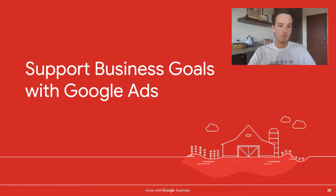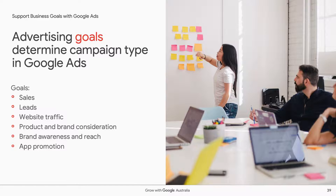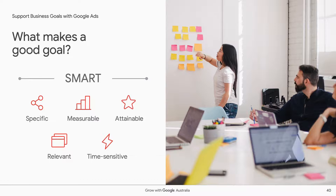To figure out which campaign type is best for your business, we recommend coming up with stringent advertising goals — such as sales, leads, website traffic, product and brand consideration, awareness and reach, or app promotion. A good goal is SMART: specific, measurable, attainable, relevant, and time-sensitive. If your goal is to drive sales or leads like phone calls or form submissions, we recommend starting with search campaigns or shopping campaigns if you have a product. If you want to build awareness, launch into a new market, or target a new demographic, display and video campaigns can be very effective.